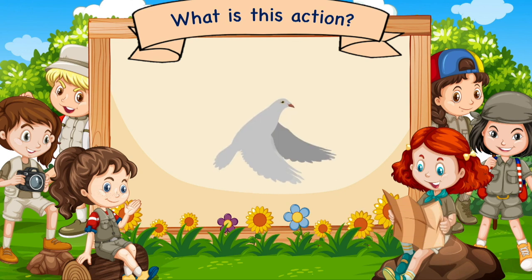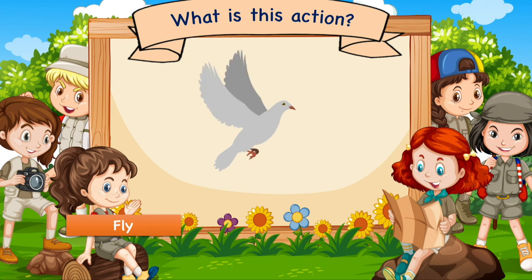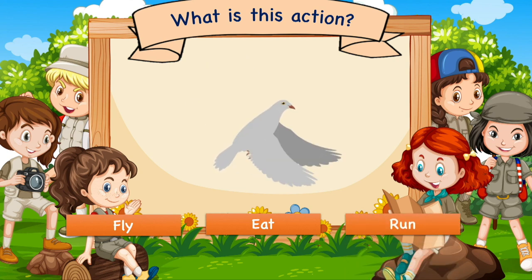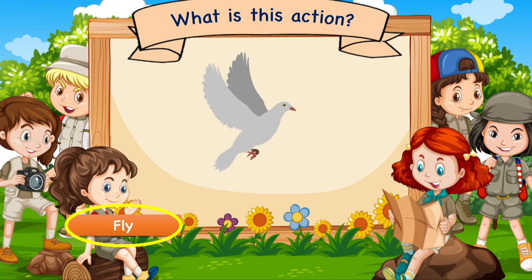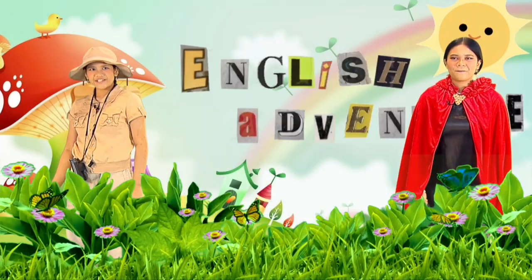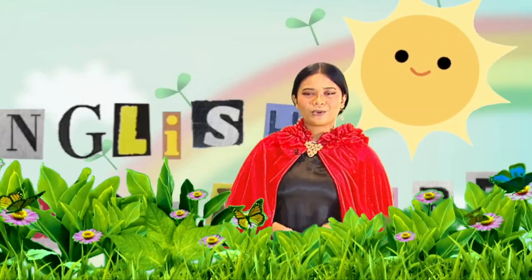Good job! This is a bird. What action do you think of when you see a bird? Is it fly, eat, or run? Eat is not the answer. Run is not the answer. So the only answer must be fly — fly like a bird! Good job children, you've got it. The question is easy, right? I think you did super well children. Let's continue with some more questions.